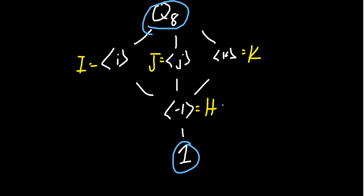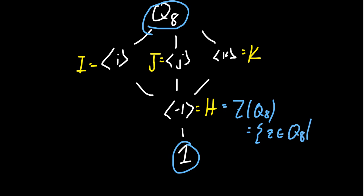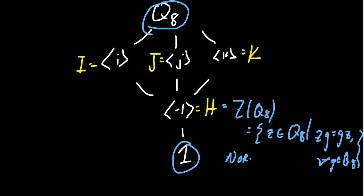We already know that the improper subgroup is normal and the trivial subgroup is normal. This group H here is none other than the center of the group — that is, the set of all elements z inside of Q8 such that zg equals gz for all g inside of the quaternion group. You can replace Q8 here with any group you want. This is the center of the group. One thing we can argue is that the center of a group is always in fact normal, and we'll talk about that in another video.